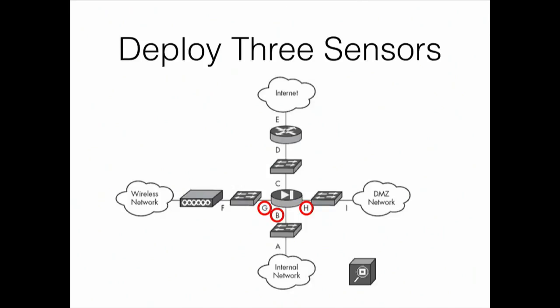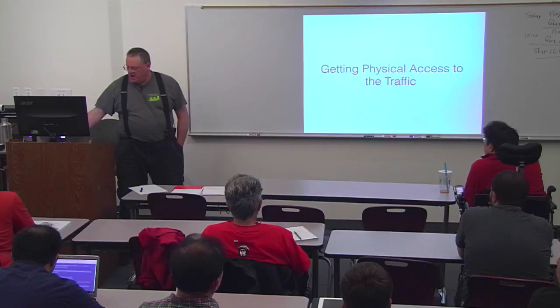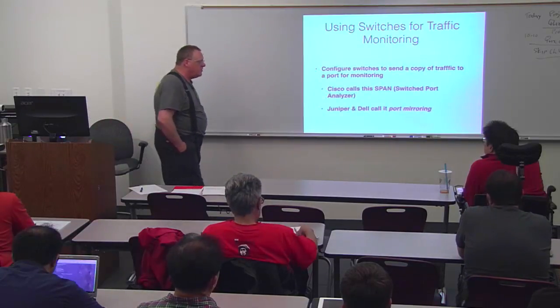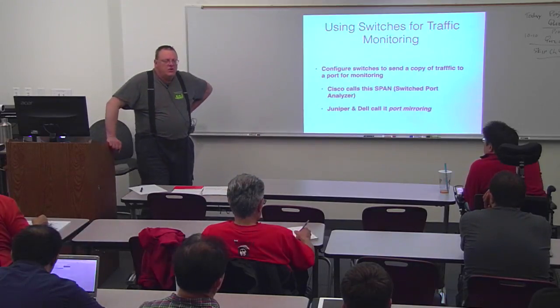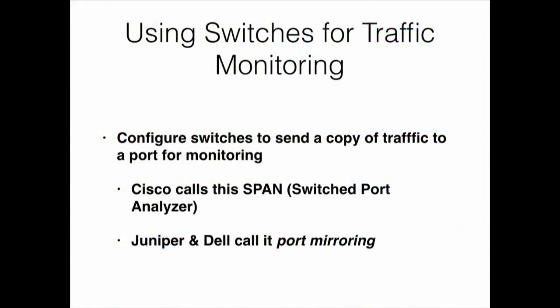So you can talk about how you actually get physical access to the traffic. One thing people talk about a lot is Cisco SPAN ports — Switch Port Analyzer. If you have a managed enterprise-class switch you can turn on this feature where you have maybe 24 ports of data flying in and out and you configure one port to make a copy of every packet. When I first heard about this I had a logic flaw: wait, if it's running at 10 gigabits per second on every port, how can the one SPAN port have enough bandwidth to move it all?